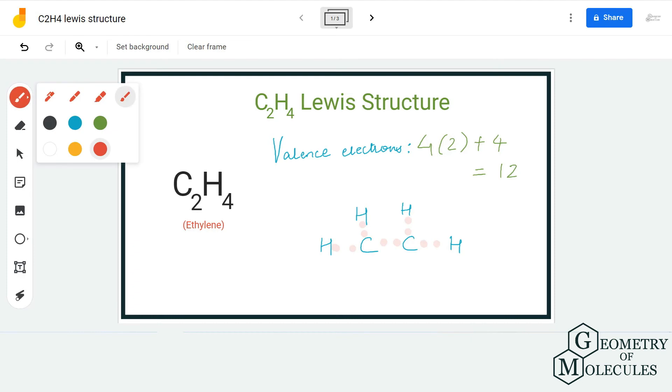I am going to place this pair of electrons between these carbon atoms. As a result, there will be a double bond formed between these two carbon atoms and single bonds with these hydrogen atoms.